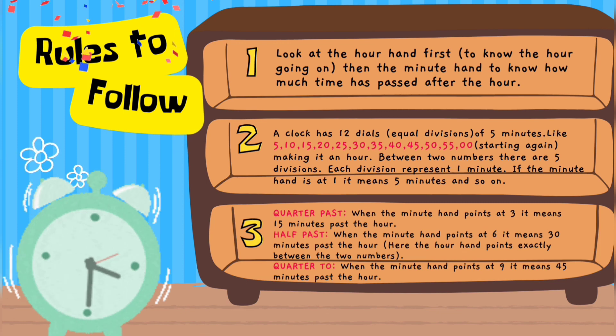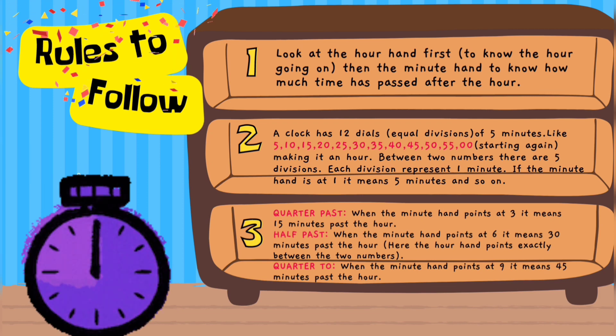Half past. When the minute hand points at 6, it means 30 minutes past the hour. Here the hour hand points exactly between the two numbers.